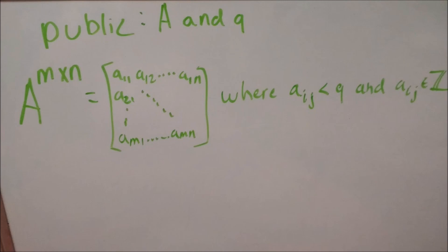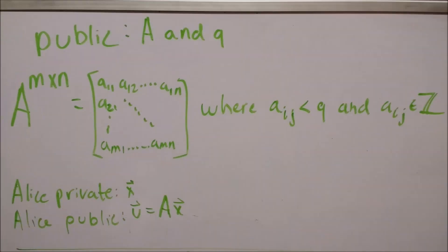In this case, that hard problem is called learning with error. Alice and Bob choose a random matrix A with dimensions n by m that is public. The only note about A is that each of its entries is actually taken mod q, for some fairly large integer q, and that integer is also public. Alice then chooses a private vector called x. x is unique because each of its m entries is either a 0 or a 1, binary.